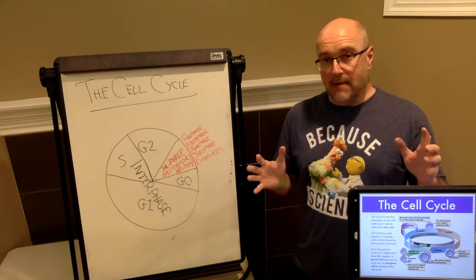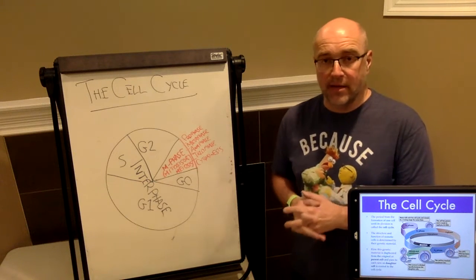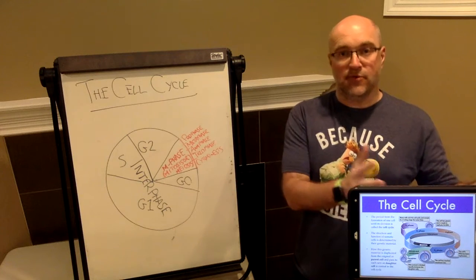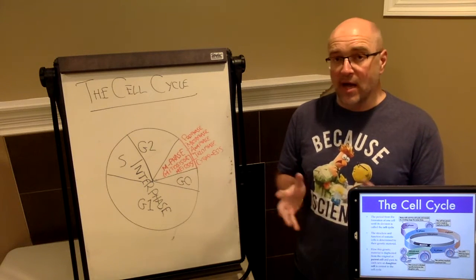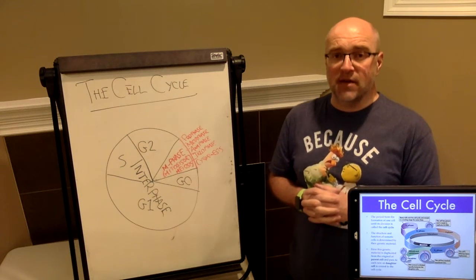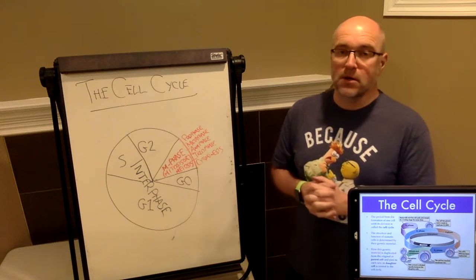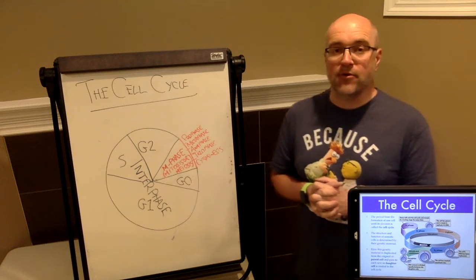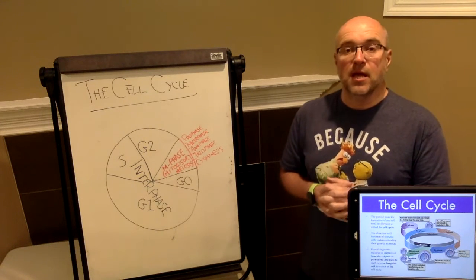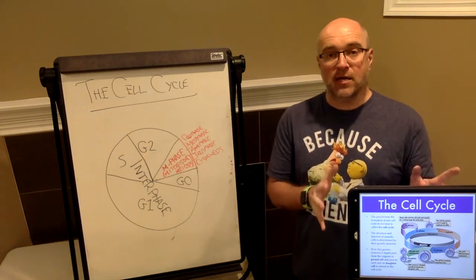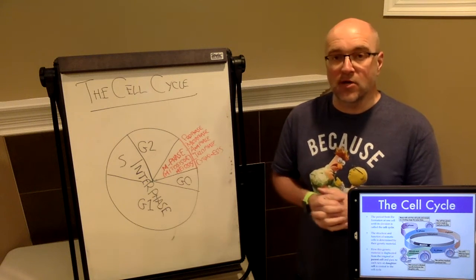This is how a single cell, a cell that gives rise to another cell, a parent cell, is going to eventually give rise to either two or four daughter cells, depending on whether the cell division in question is going to be a mitotic or a meiotic cell division.